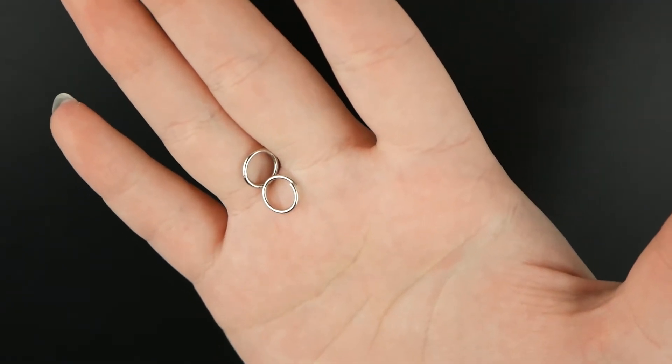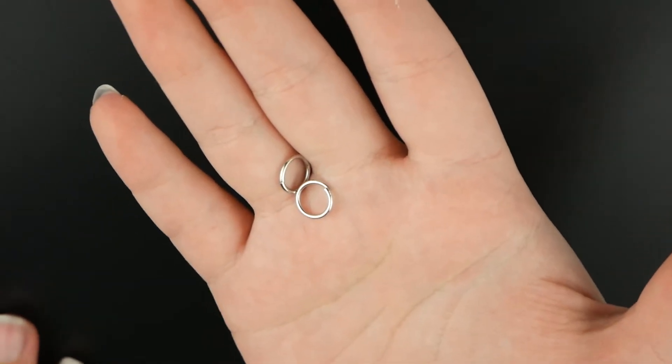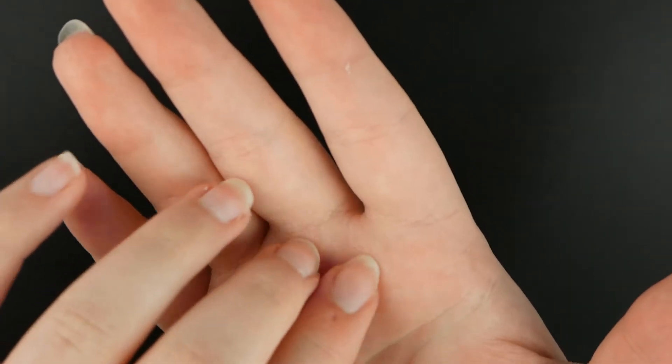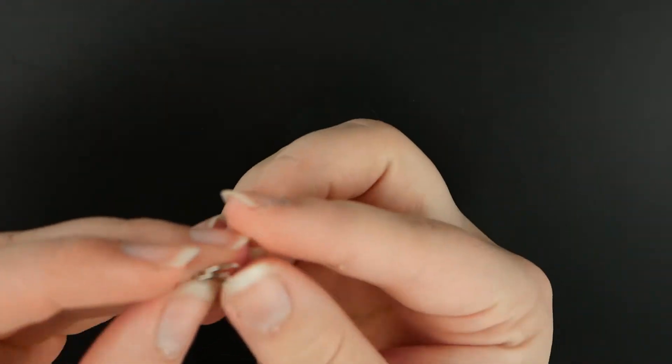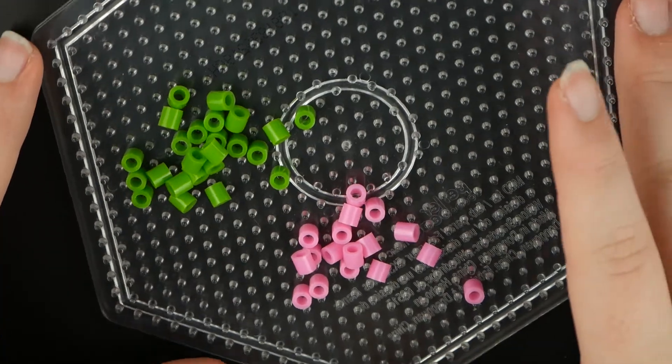You will need an iron, and then you will need some jewelry pliers and large jump rings. These ones are either nine or ten millimeters. The reason why we need such big jump rings is just so that it can fit through the flowers.